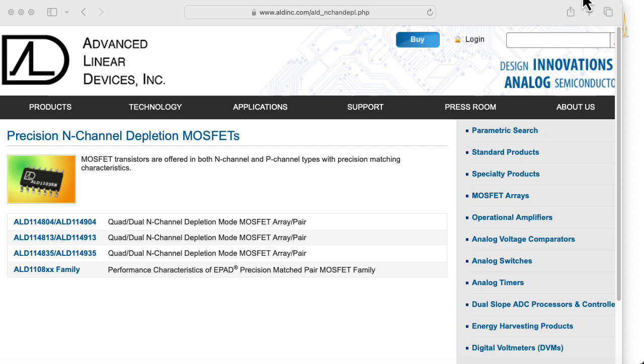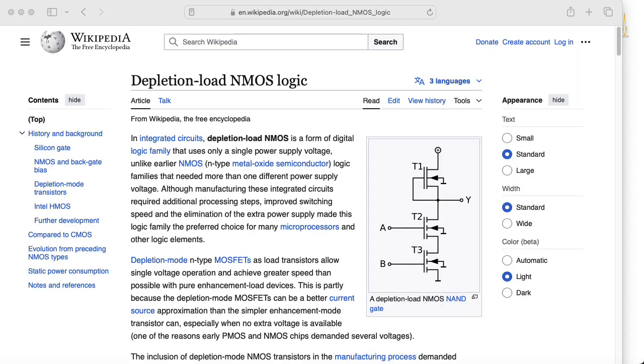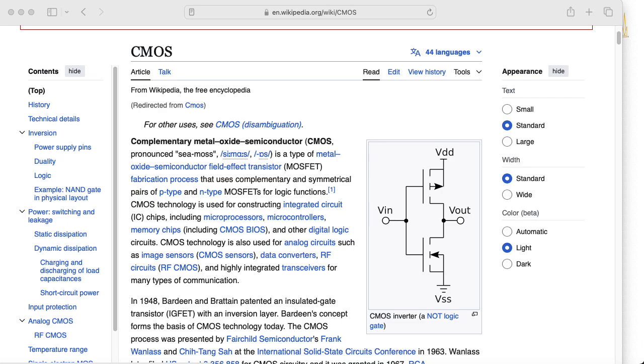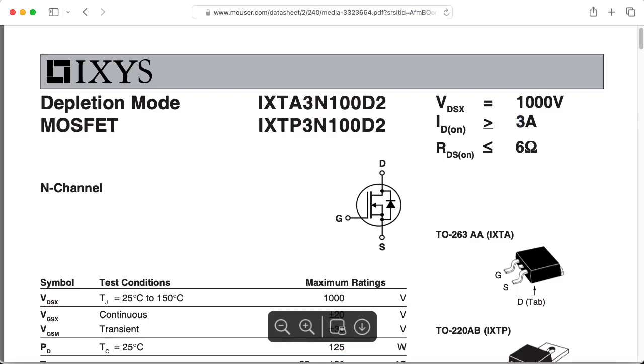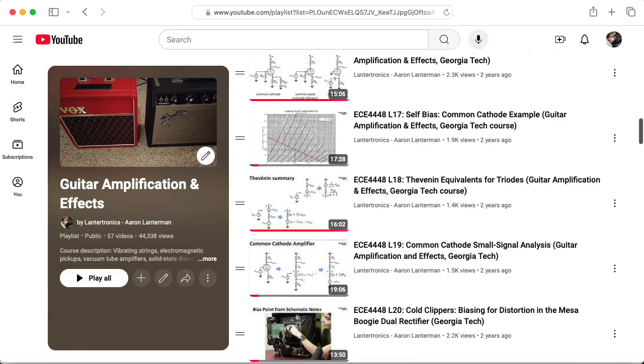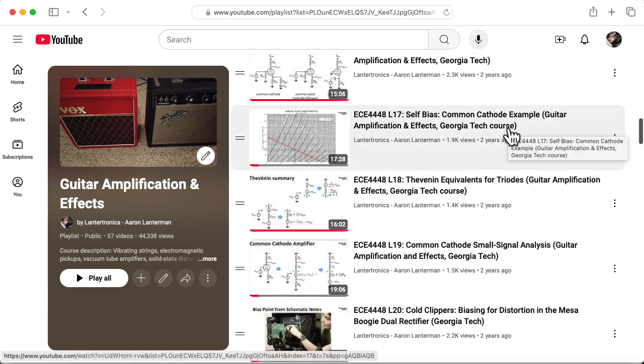This self-bias concept also applies to depletion mode MOSFETs. Although I don't think depletion mode MOSFETs are used that often in analog circuits anymore. Depletion mode MOSFETs were used in digital logic circuits, when you had strictly NMOS or strictly PMOS processes. But that all kind of went by the wayside when CMOS came on the scene. There are depletion mode power MOSFETs, but these are probably being used as switches and not in a linear mode.